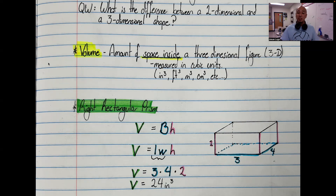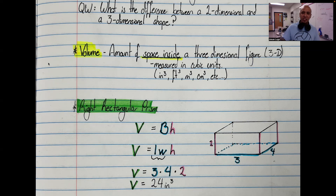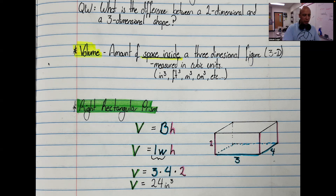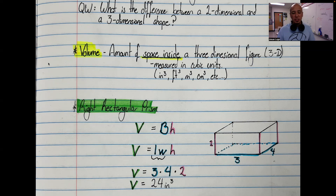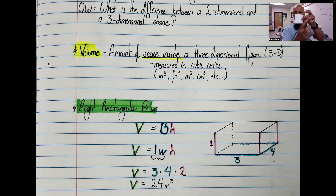Volume is the amount of space inside of a three-dimensional object. What do we mean by 3D? Consider a two-dimensional object. Picture something that is completely flat, like a square, or the face of a circle, or even a rectangle. Those are known as two-dimensional shapes. What makes them two-dimensional is that you can measure them horizontally and you can measure them vertically — they have two dimensions, a horizontal component and a vertical component.